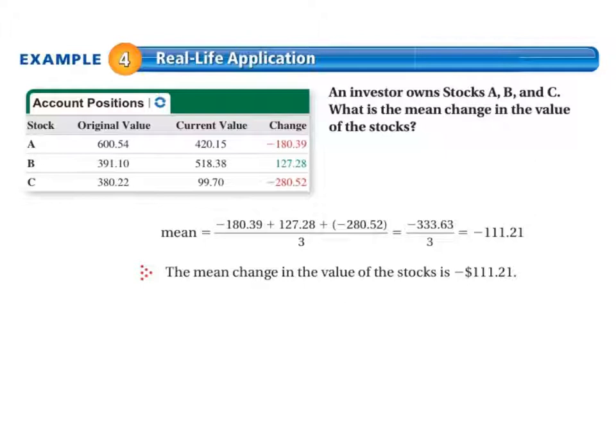Moving on to example 4, our real life application: an investor owns stocks A, B, and C. What is the mean, the average change in the value of the stocks? So we add up all of the changes and we get negative 333.63. We divide that by three because there were three of them, and that turns out to be negative 111.21. So the mean change in the value of the stocks was negative 111.21.